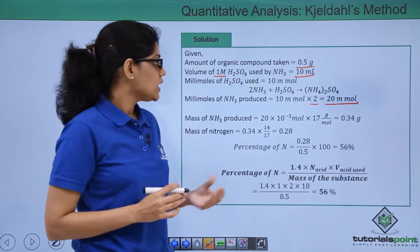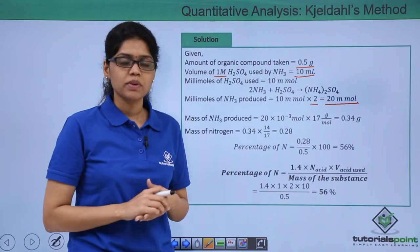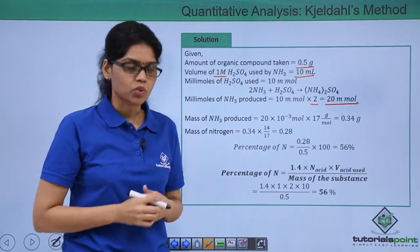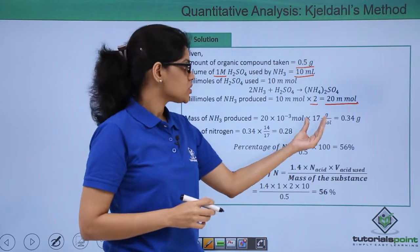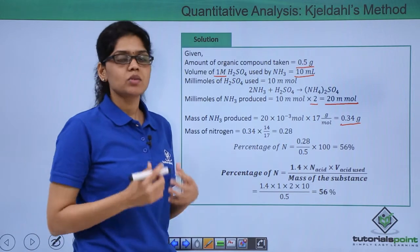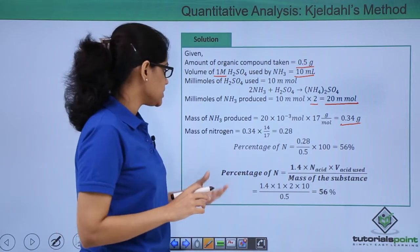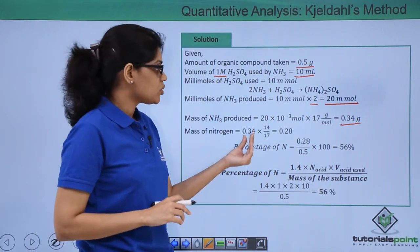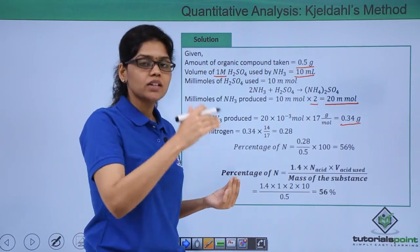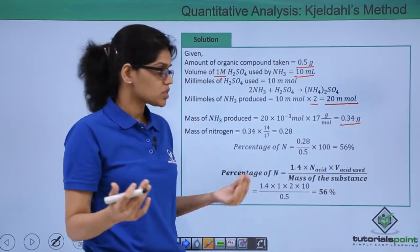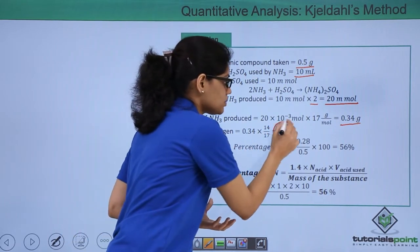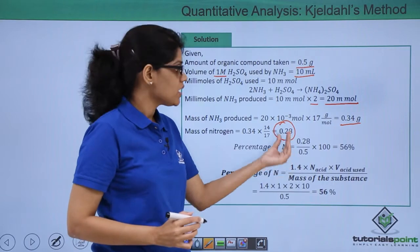The mass of ammonia produced would be simply moles multiplied by the gram molecular mass of ammonia which is 17. Doing the multiplication gives the value as 0.34 gram. From there you can easily calculate the mass of nitrogen: 0.34 × (14/17), where 14 is the mass of nitrogen and 17 is the molecular mass of ammonia.